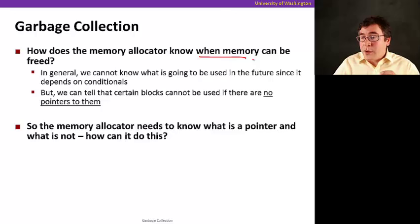So let's see some of the core questions of garbage collection. The first one is knowing when memory can be freed. So in general, it's very hard to know what's going to be used in the future since it depends on conditionals and so on. So we have to have a way of knowing that's never going to be used again. But we can know when certain blocks are no longer reachable. There's nothing that points to them. So if you have blocks in your heap but we know there are no pointers to those blocks, we know for sure that those blocks can be collected, can be freed.